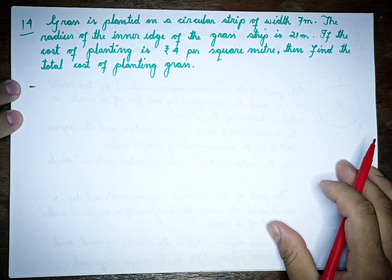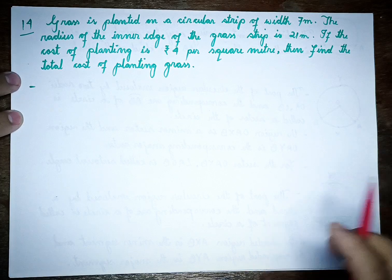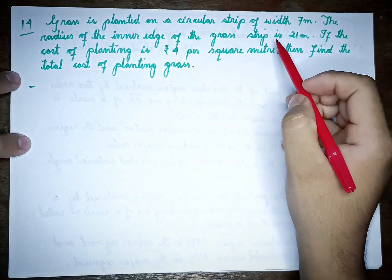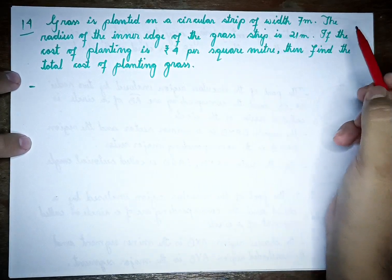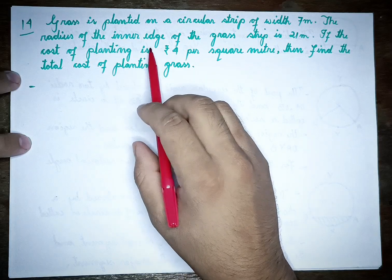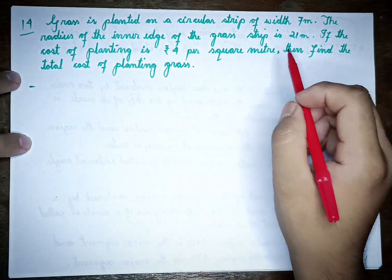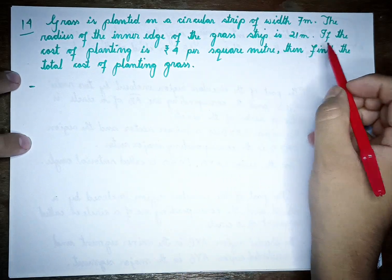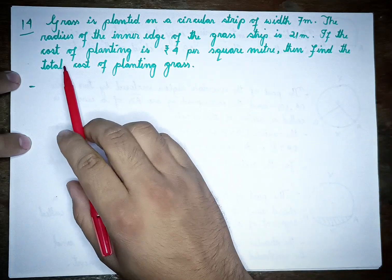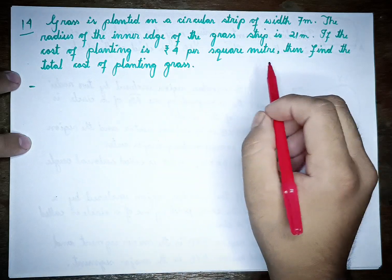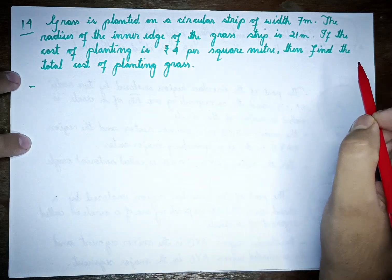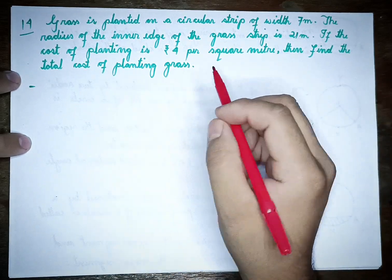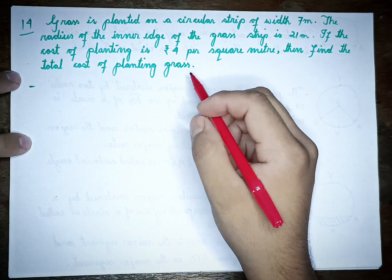Next, question number 14. Question number 14 says: grass is planted on a circular stripe of width 7 meters. The radius of the inner edge of the grass stripe is 21 meters. If the cost of planting is Rs. 4 per square meter, then find the total cost of planting grass.